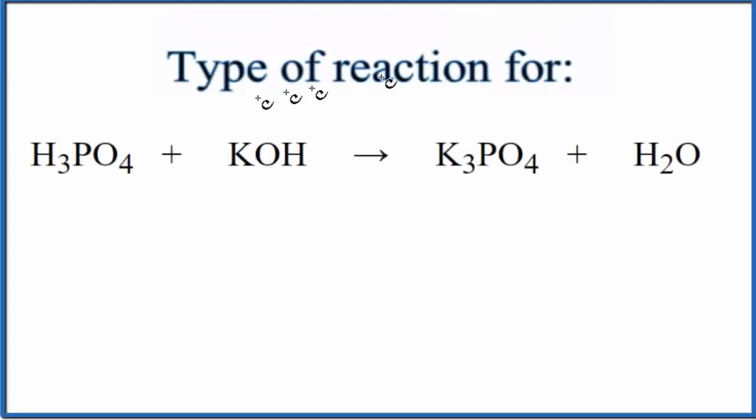In this video we'll take a look at the type of reaction for H3PO4 plus KOH. This is phosphoric acid and potassium hydroxide. We're assuming there's sufficient potassium hydroxide to form the following products.